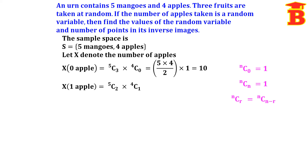For 1 apple: choose 1 apple from 4 (4C1 = 4) and 2 mangoes from 5 (5C2 = 10). So 4C1 × 5C2 = 4 × 10 = 40 possibilities.